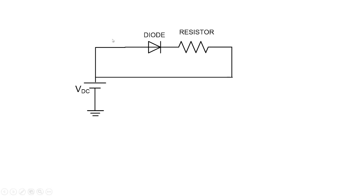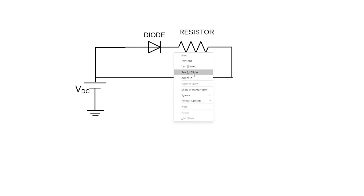The interviewer drew a circuit on his screen and shared it. In the beginning they ask easy questions and then gradually move to more conceptual ones. The first question was about a circuit with a diode: will any current flow or not, and why? Since the circuit was not complete, no current would flow.